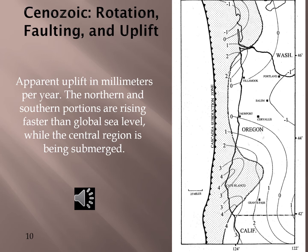This map illustrates the apparent rate of uplift along the Pacific coast expressed in millimeters per year. The north-south discrepancy in numbers is a function of inter-seismic strain accumulating along the subduction boundary between the two plates. The north and south areas are active while the Newport area is static. This leads one to assume that when the large earthquake occurs, it will happen at the subduction zone opposite Cape Blanco.